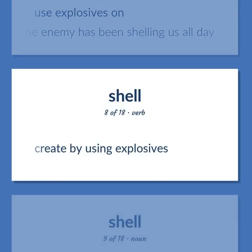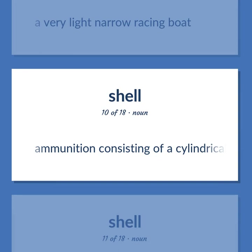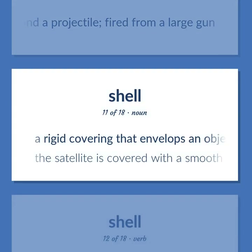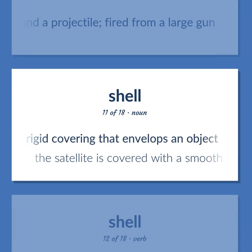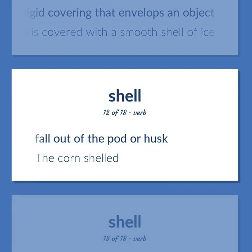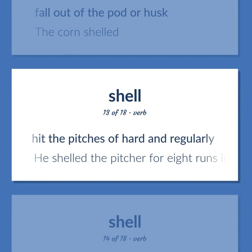Shell: Create by using explosives. A very light narrow racing boat. Ammunition consisting of a cylindrical metal casing containing an explosive charge in a projectile, fired from a large gun. A rigid covering that envelops an object — the satellite is covered with a smooth shell of ice. Fall out of the pot or husk — the corn shelled. Hit the pitches of hard and regularly — he shelled the pitcher for eight runs in the first inning.